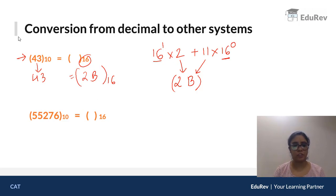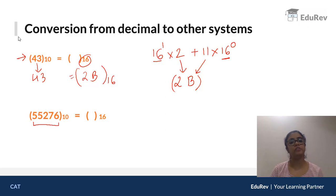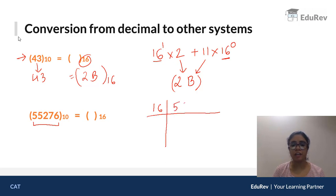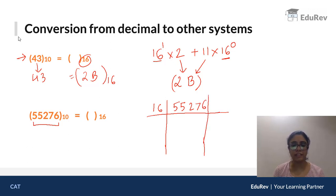Now let's look at another question — a much larger number that we need to convert into hexadecimal again. We will make a table and divide 55276 by 16 repeatedly, writing the remainder each time in the final column.